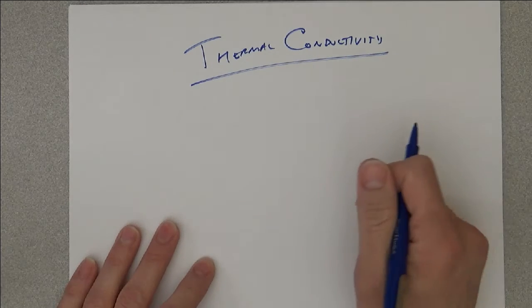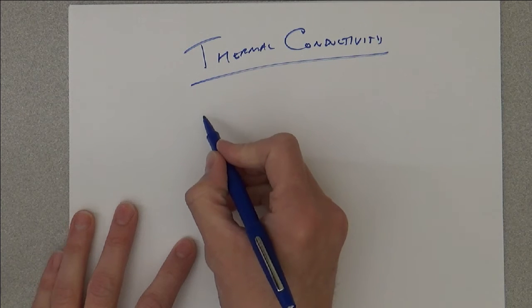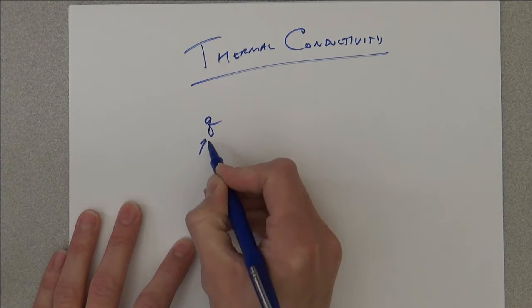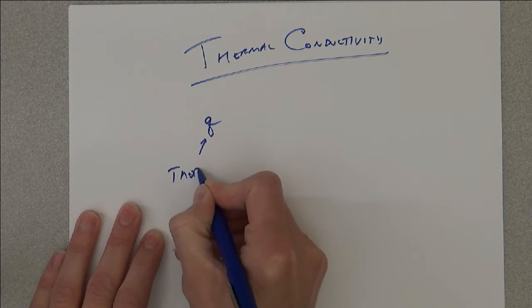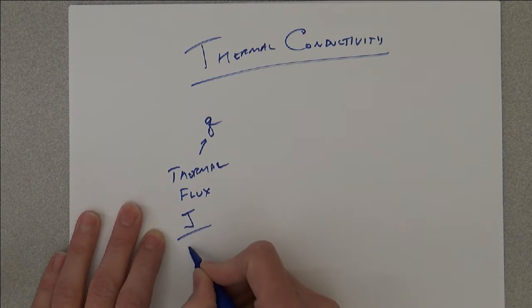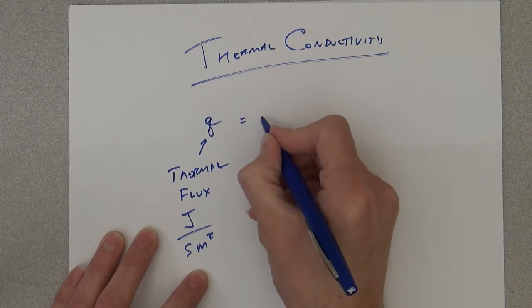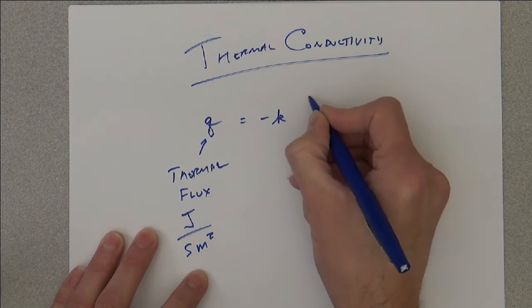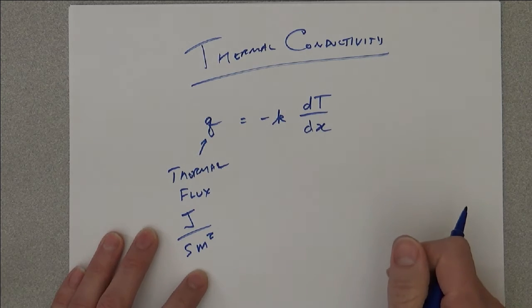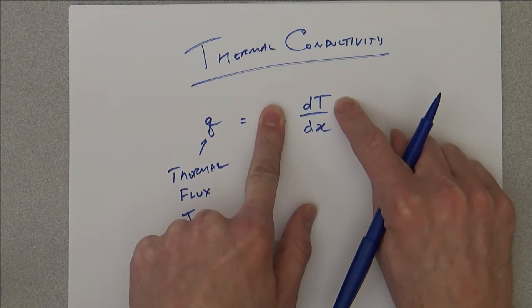Thermal conductivity is the passage of thermal energy through the material. We talk about it in terms of the flux of energy Q, which is thermal flux with units of joule per second meter squared. It equals negative K dT/dx. So basically, the thermal flux is proportional to the temperature gradient.